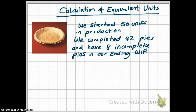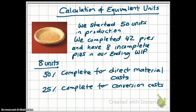We completed 42 pies during production. However, we have 8 incomplete pies in our ending work in process — incomplete pies means pies that haven't been filled, for example. Your questions will always give you additional information that you need to calculate equivalent units: how complete these pies are for direct material costs and how complete they are for conversion costs.